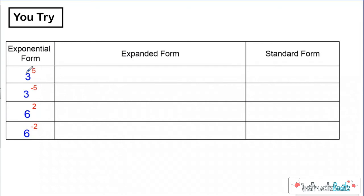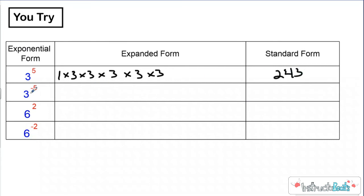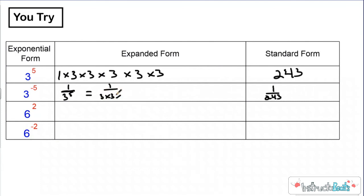Hopefully you just paused it. So here we have three to the fifth power, which we know is just gonna be three times three times three times three times three — you're always starting with one but a lot of times you don't write that. When you multiply all these out, three to the fifth power is going to be 243. Now three to the negative fifth power: using the shortcut, the answer should be the reciprocal of three to the fifth power, so it should be one over 243. In expanded form that's really one divided by three times three times three times three times three, which when you solve that is one over 243.